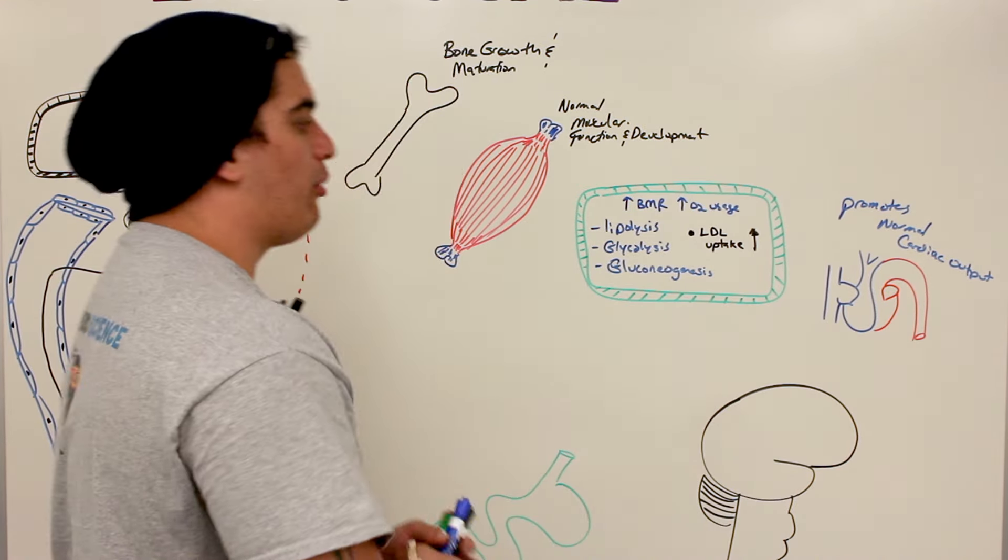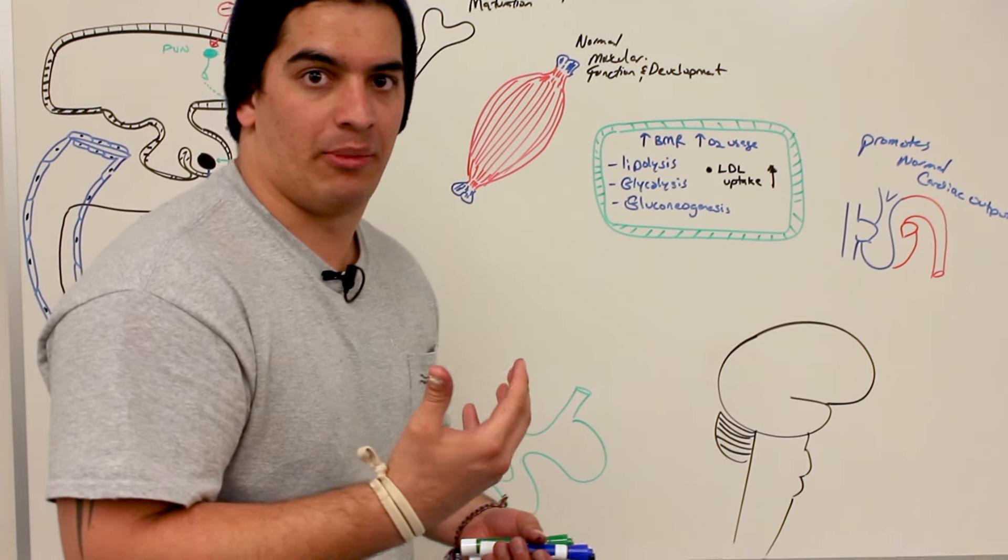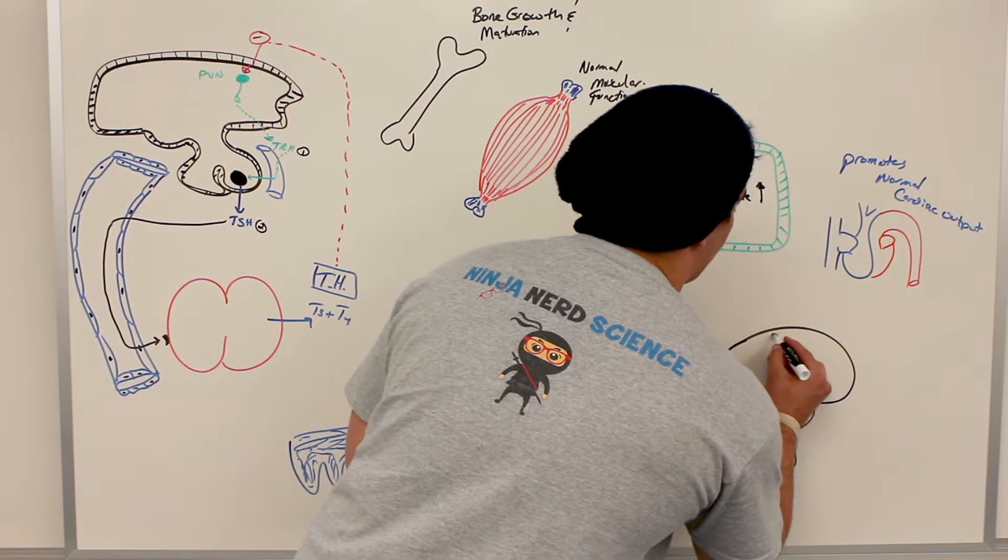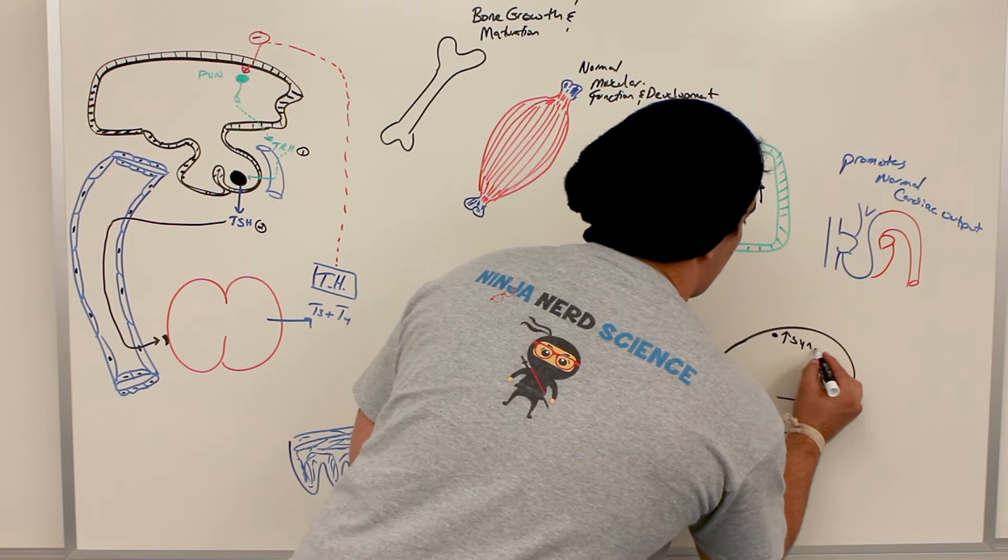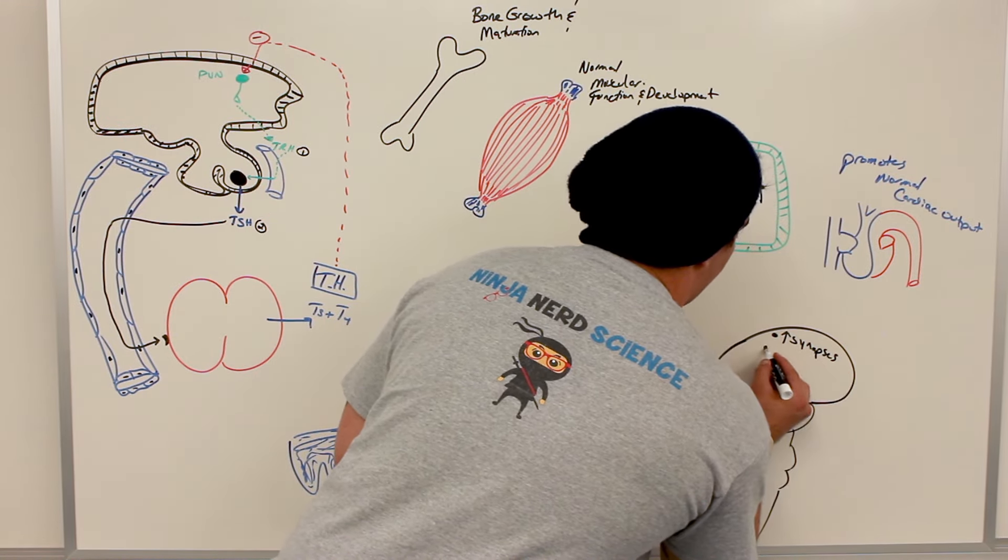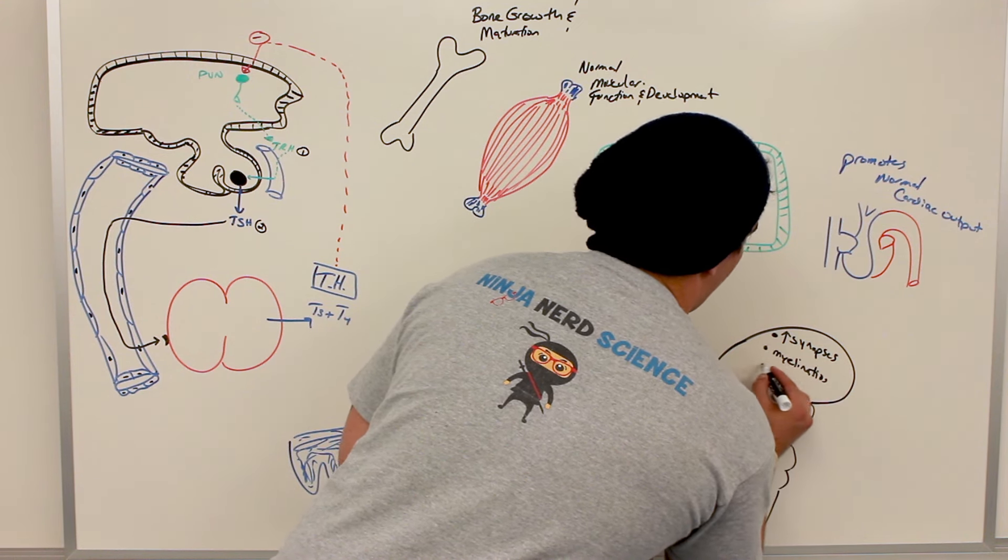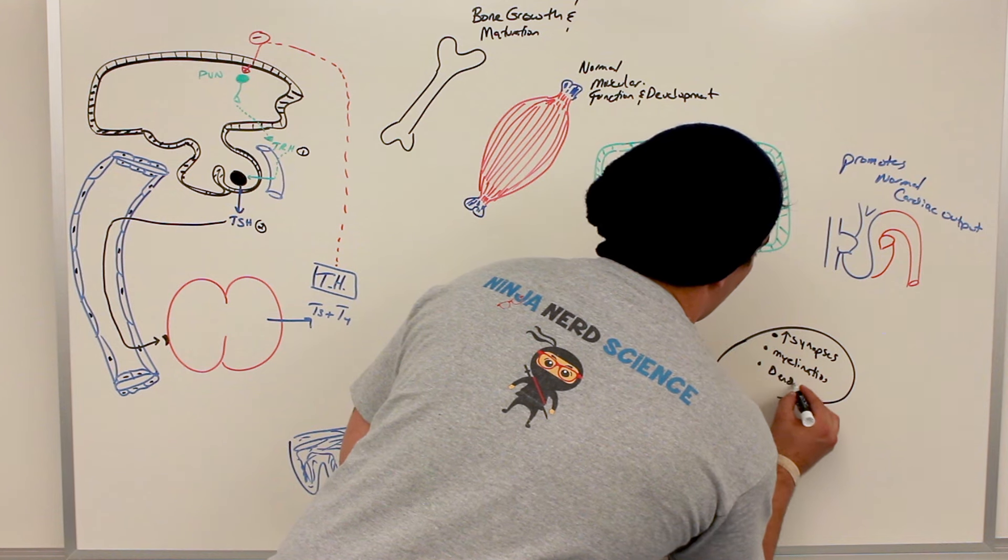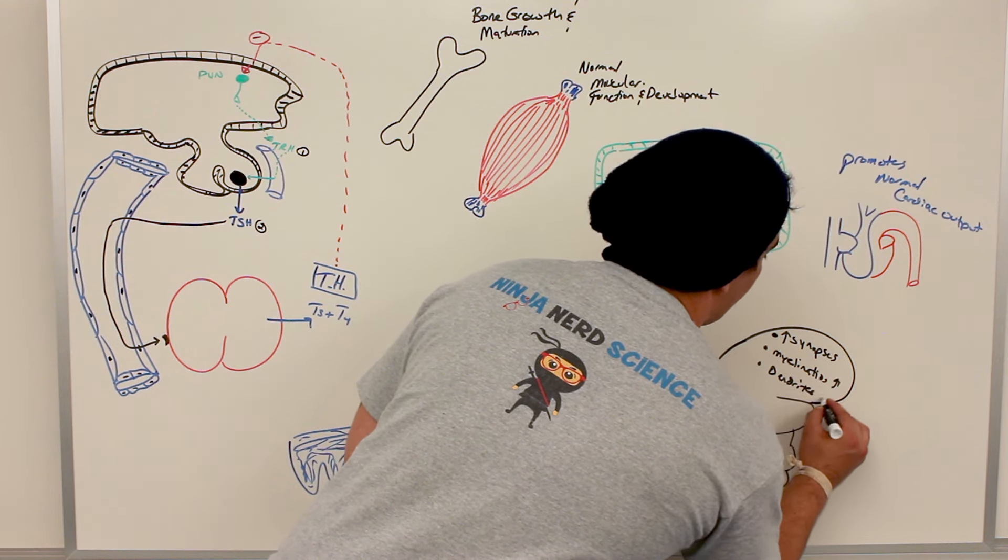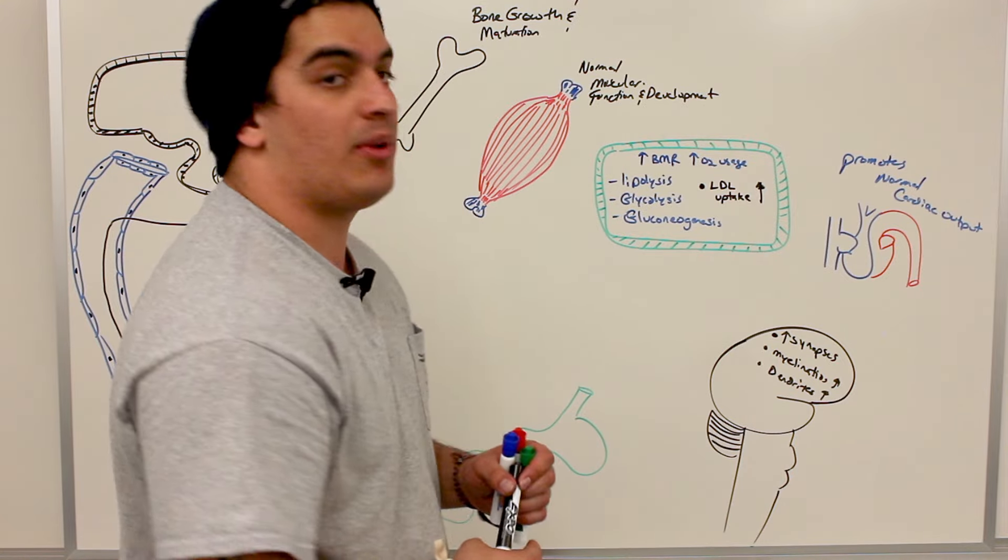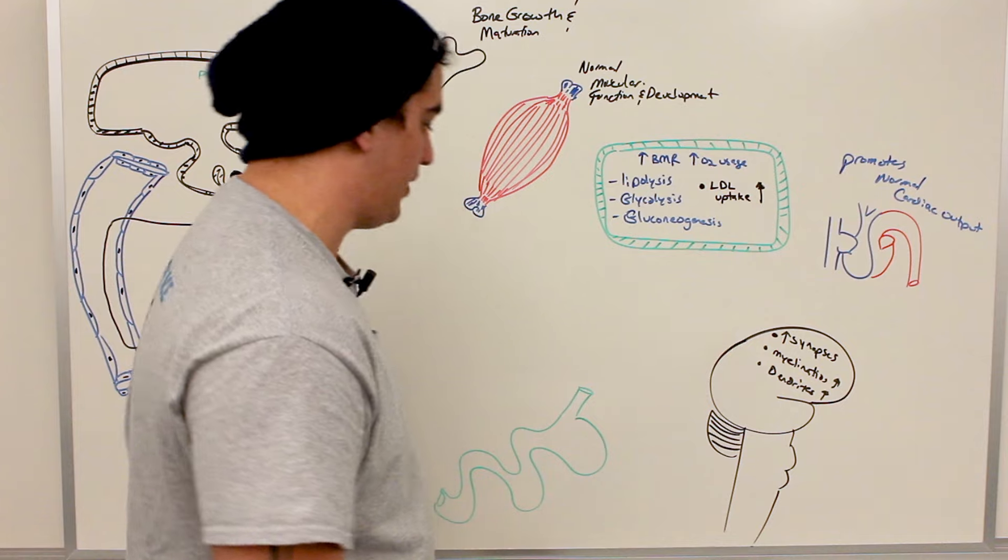All right. What about on the brain? It promotes normal nerve development. So it promotes the actual increase in the synapses. So what does it do? It increases the synapses, it increases the myelination, it increases the dendrites. So all of these things are helping to increase the actual nervous system development and function.